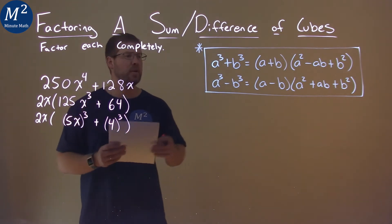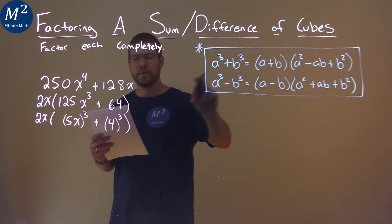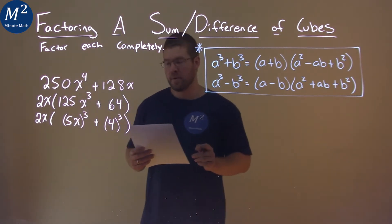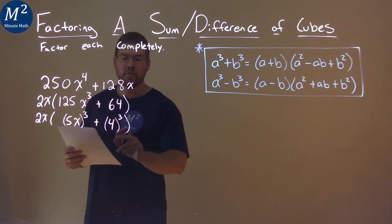So now we have an a value of 5x in our formula, and a b value of 4. So now we can use our formula here.